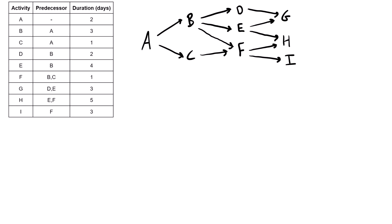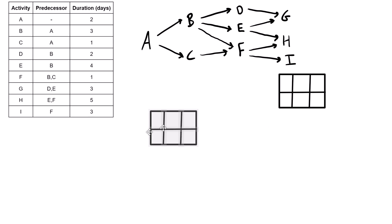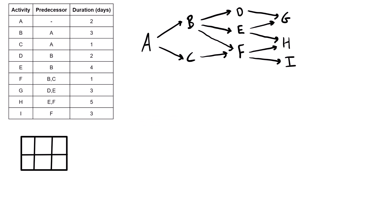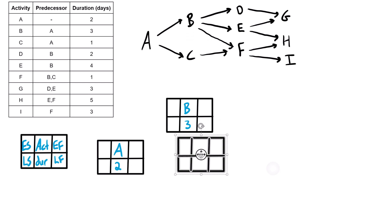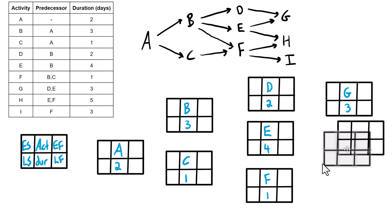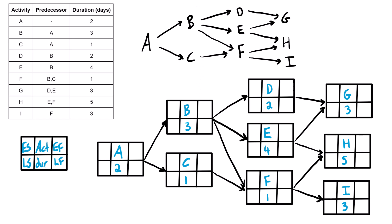Moving into the formal copy, let's set up our convention. We'll use a labeled box as our legend: the activity name goes in the top middle, the duration in the bottom middle, early start in the top left, early finish in the top right, late start in the bottom left, and late finish in the bottom right. We can now redraw the rough sketch, replacing each node with one of these boxes.